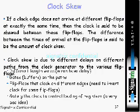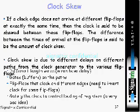Clock skew is due to different delays on different paths from the clock source to various flip-flops. The reasons include different lengths of wires, gates or buffers on the paths, flip-flops that clock on different edges — where we need to invert the clock for some flip-flops — and gated clocks used to control loading of registers. These are all scenarios that produce clock skew.